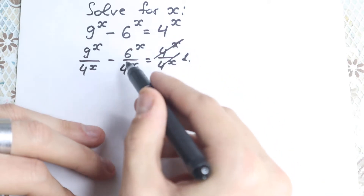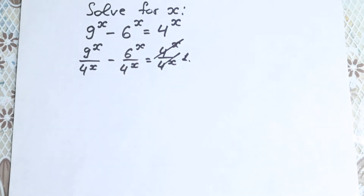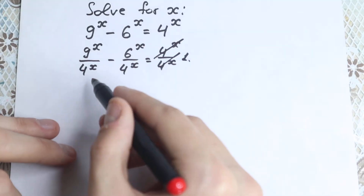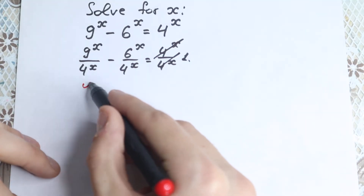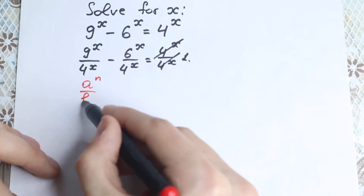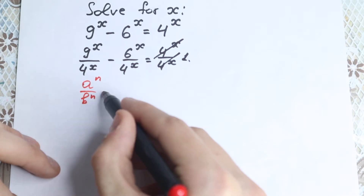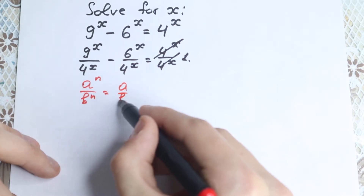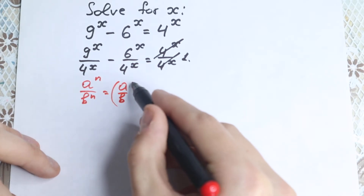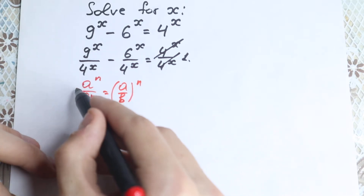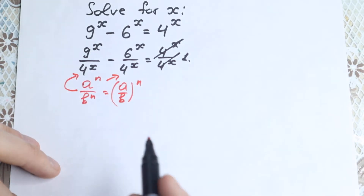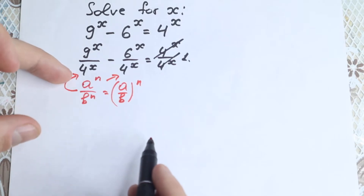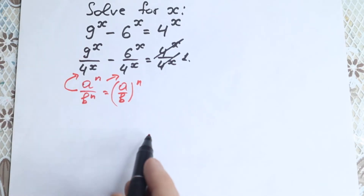Now, if you know a little bit about power rules and properties, we can apply this situation: a to the power n over b to the power n equals a over b, all raised to the power n. Let's apply this rule here, because we have different bases but the same exponent.